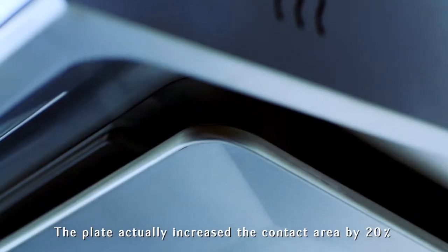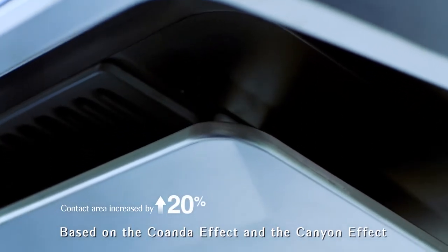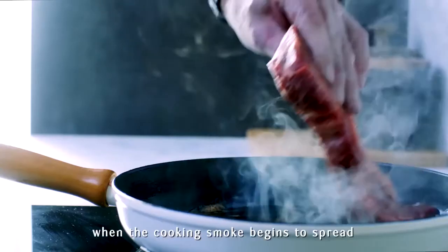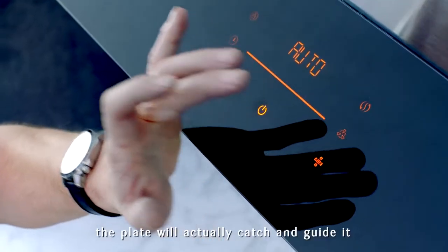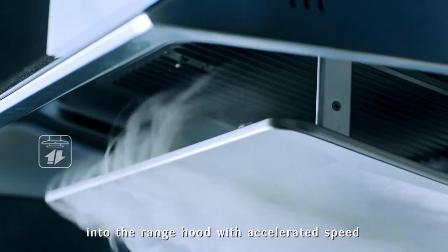The plate actually increased the contact area by 20%. Based on the colander effect and the canyon effect, when the cooking smoke begins to spread, the plate will actually catch and guide it into the range hood with accelerated speed.